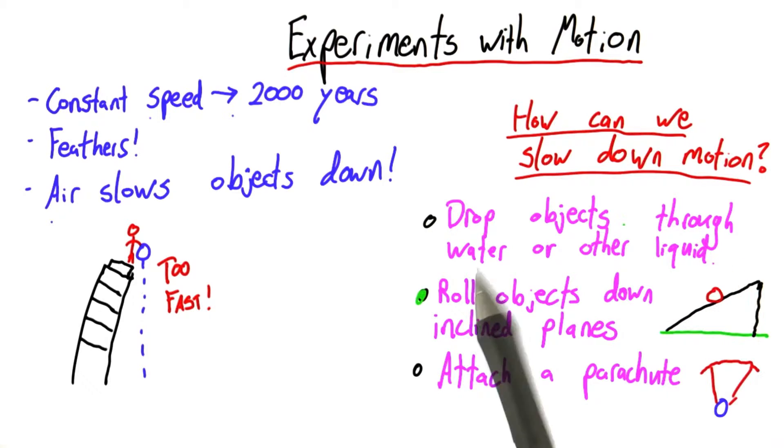Same thing when we drop an object through water or another liquid. That water is basically doing the same thing as the air would be doing when we drop a feather, but it's having an even greater effect. If we want to make air resistance negligible, the thing to do is to roll objects down inclined planes.